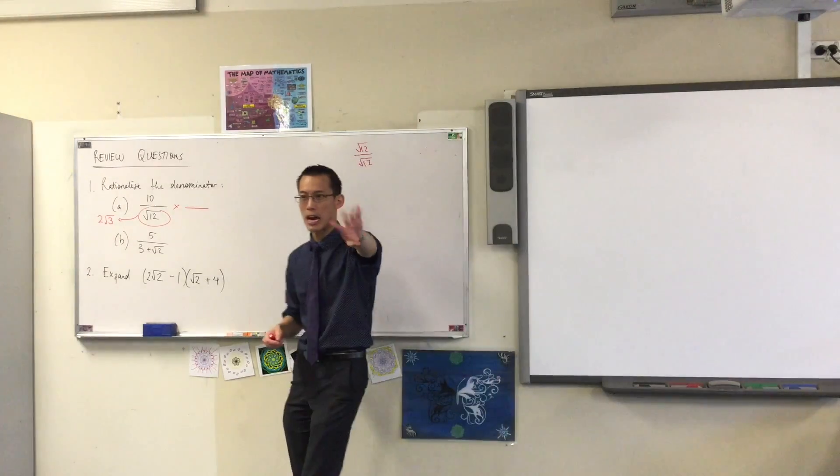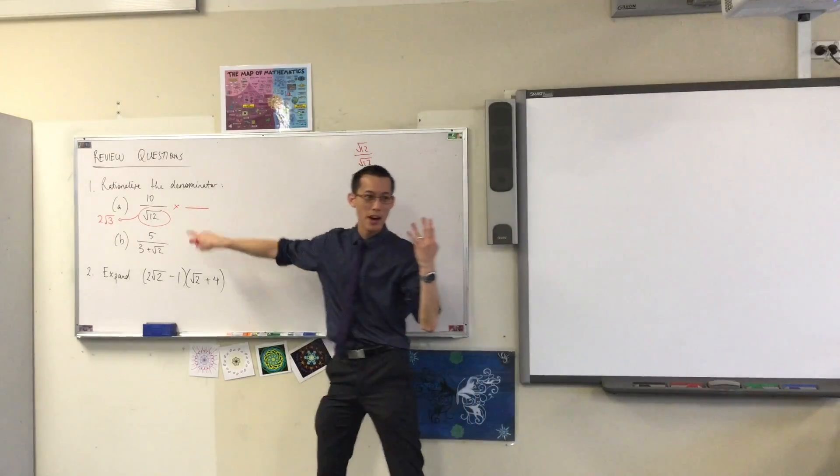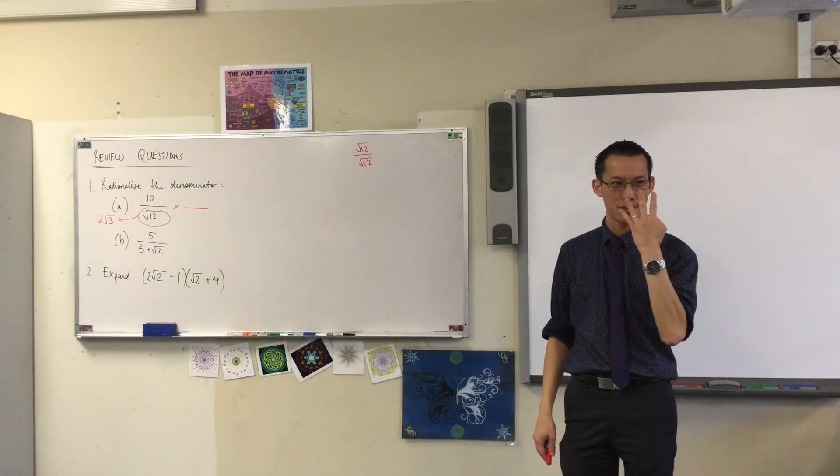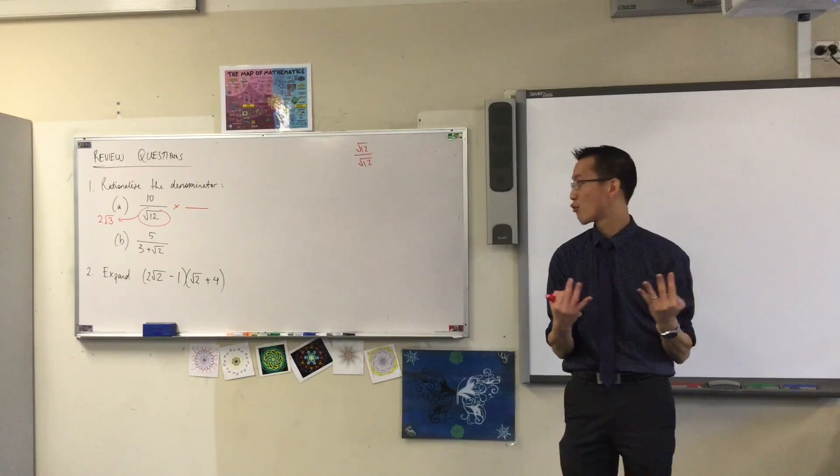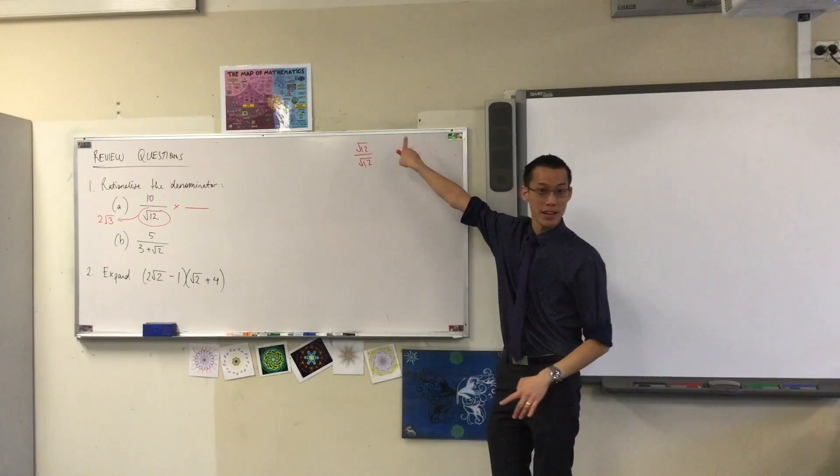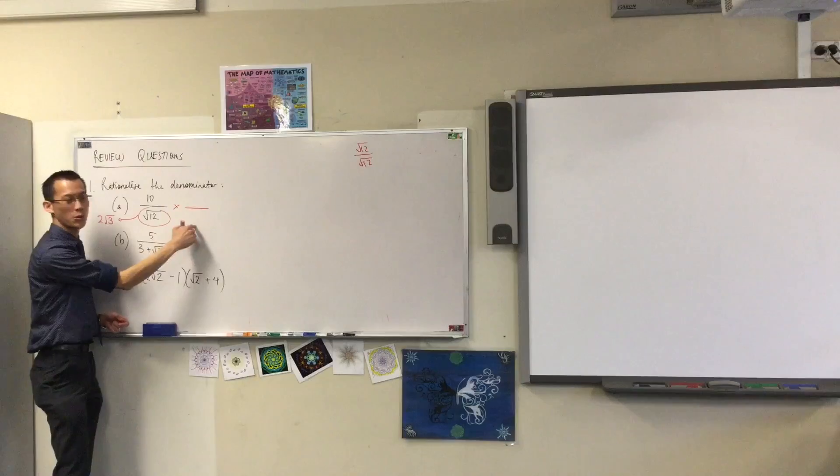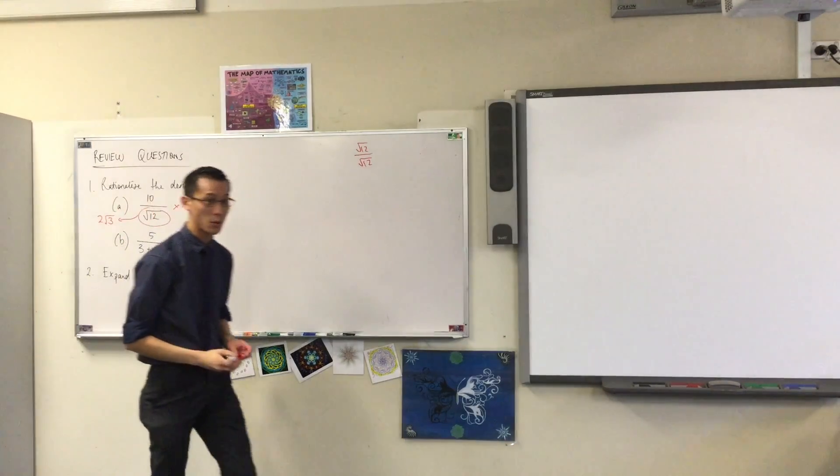Very good. I don't know if you heard that. I saw Nathan show it, right? Root 12 is root 4 times root 3. That gives you root 12, and root 4, you know what that is because it's not actually a surd even though it has a square root sign. So therefore, what I'm going to do instead of multiplying by root 12 on root 12, I'm going to do root 3 on root 3. You see why?